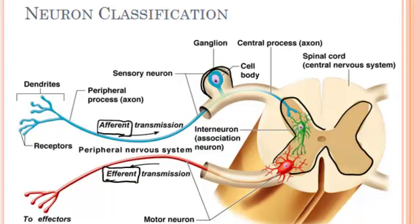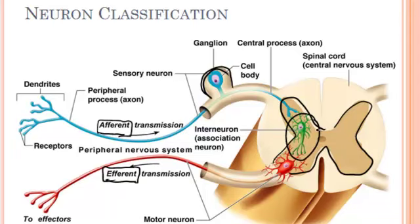The efferent or motor neurons are always going to have their cell bodies in the CNS. Then we have one other little neuron here — this green one in the middle — called an interneuron. The whole interneuron is found in the CNS; its cell body is found in the spinal cord. But it connects the afferent pathway to the efferent pathway. We'll talk about reflexes, but a signal coming into the CNS can go through this interneuron and back out through the efferent neurons.